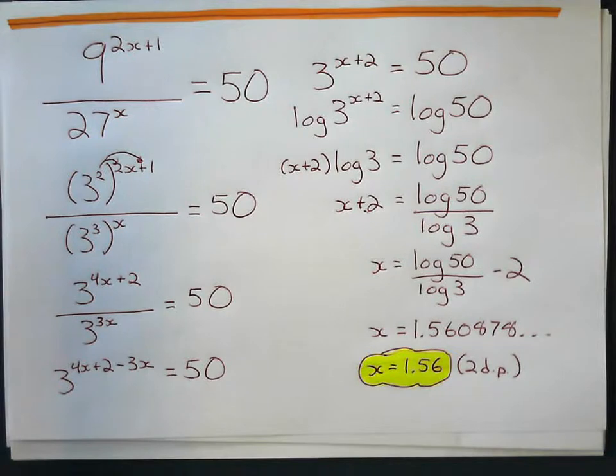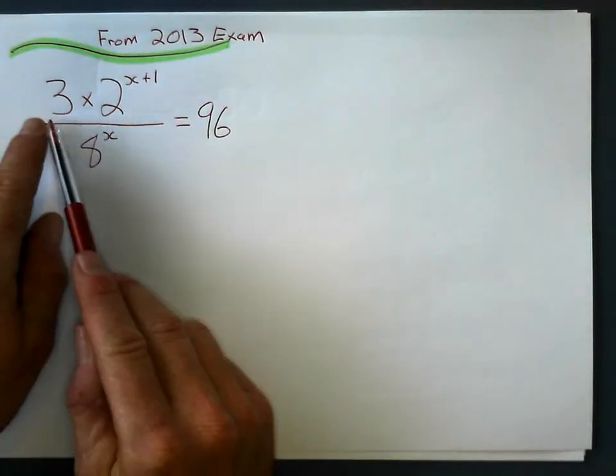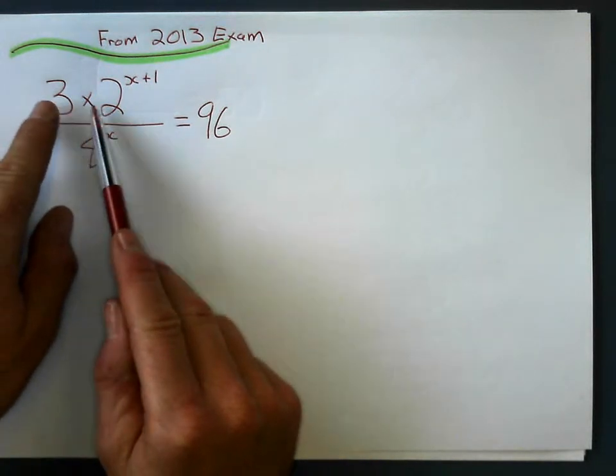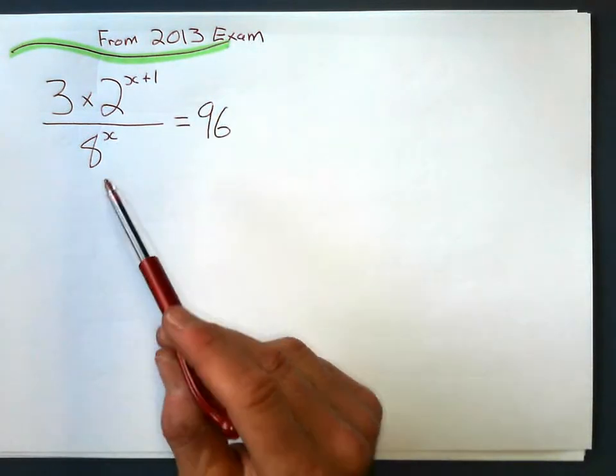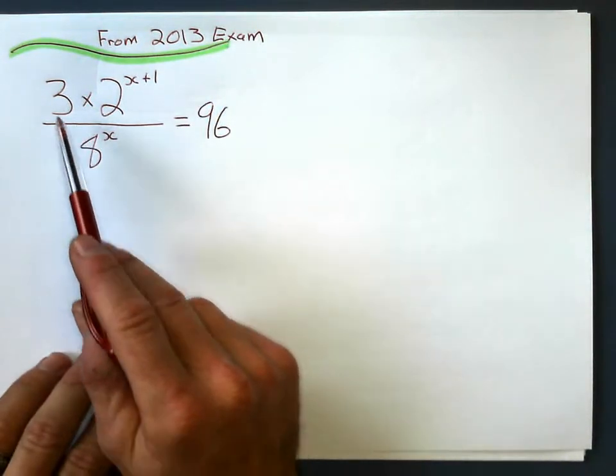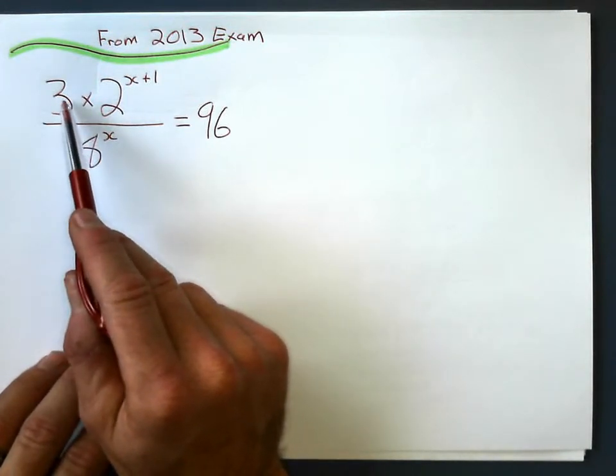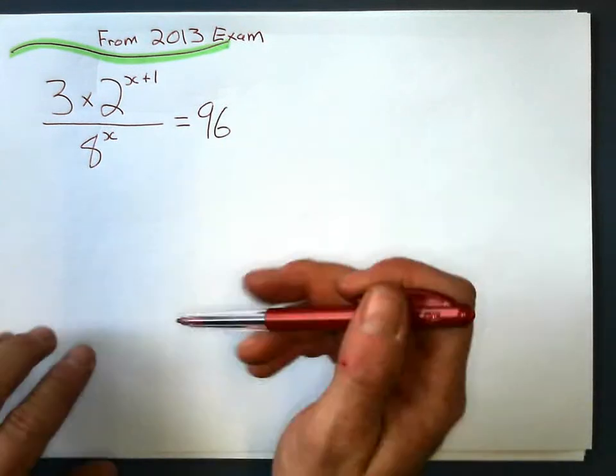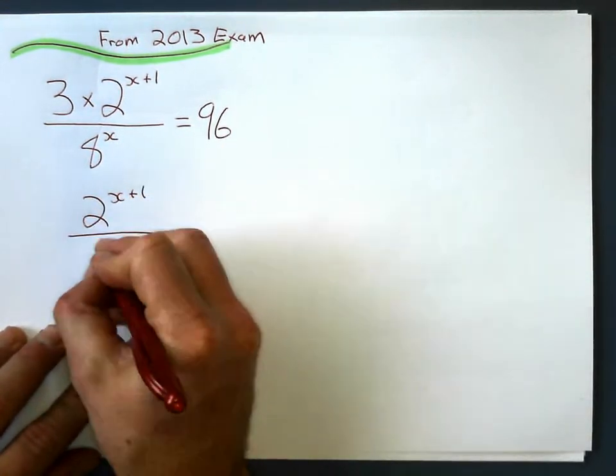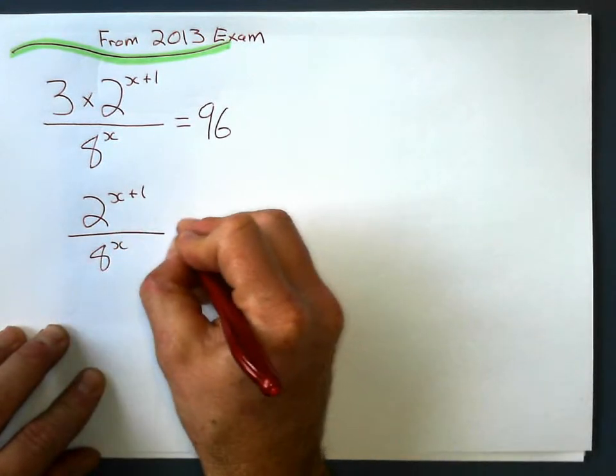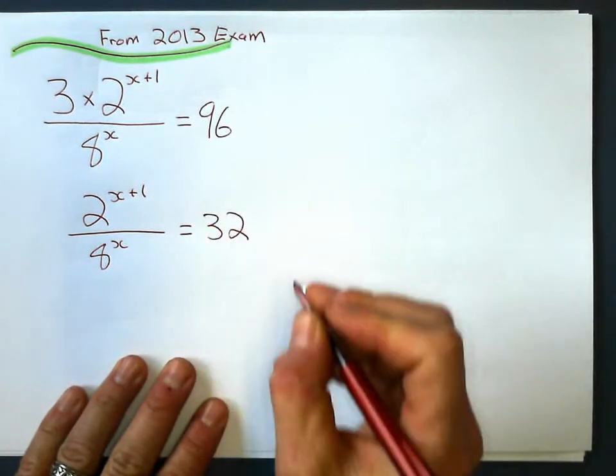One more example, and I think we'll be okay. This last one's different in the fact that we're multiplying this by something. Now, this is from the 2013 algebra exam, NCEA level 2. I want to get rid of that, I don't want that. So since it's times 3 here, I'm going to divide it by 3 to get rid of it. So I'm going to say 2 to the power of x plus 1 over 8 to the power of x equals 96 divided by 3 gives me 32.